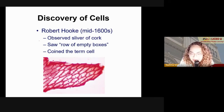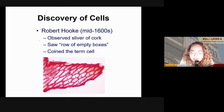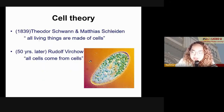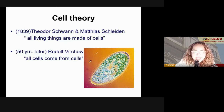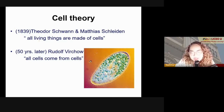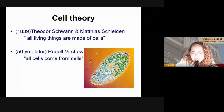Why did he call them cells? Because they looked like rows of empty boxes — they looked like the cells of a prison. That's what he saw. Then, on the other side of England, we have Theodor Schwann and Matthias Schleiden, who through their experiments were able to conclude that all living things are made of cells.